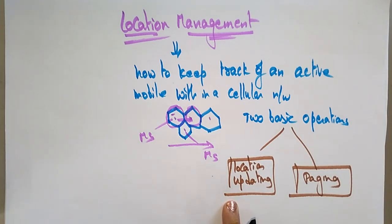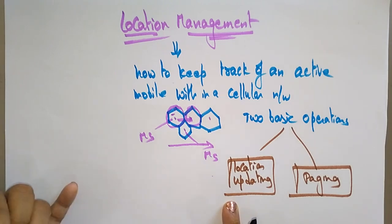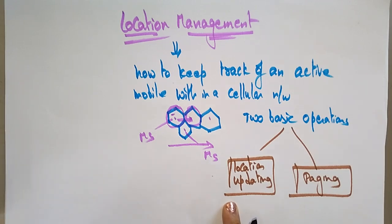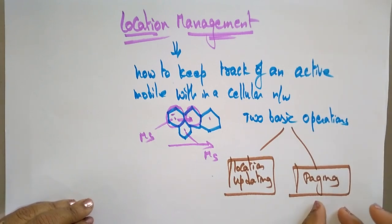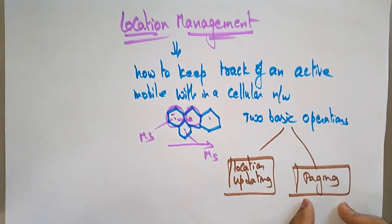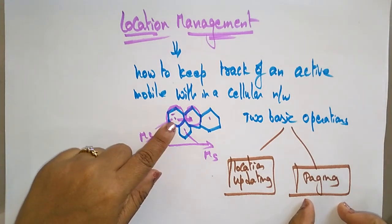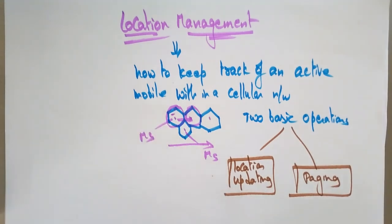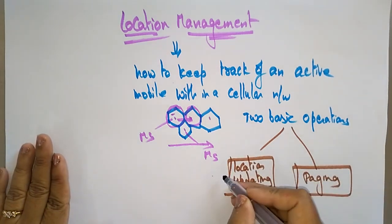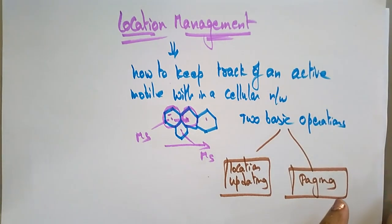Location updating means informing the network of a device's location. Whatever network you are using — whether it is Airtel, Idea, or any other network — it is always informing the network of the device's location. This updates automatically whenever you change from one cell to another, from one base station to another. Paging is polling a group of cells to determine the precise location of the device.